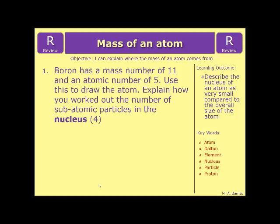The review question is, Boron has a mass number of 11 and an atomic number of 5. Use this to draw the atom and explain how you worked out the number of subatomic particles in the nucleus. Have a go at that, and let me know if you need any help. That's the end of this video.